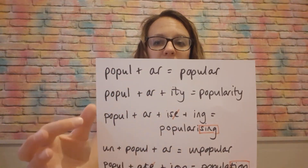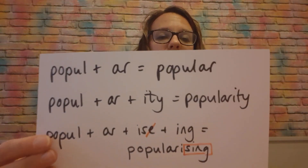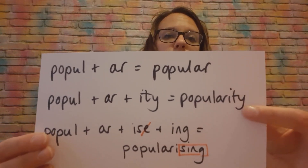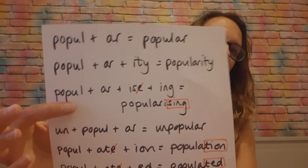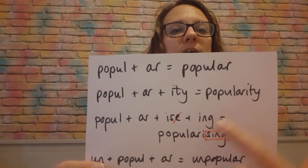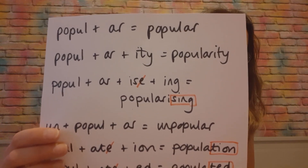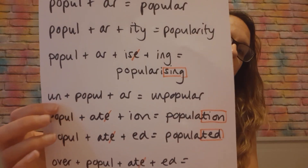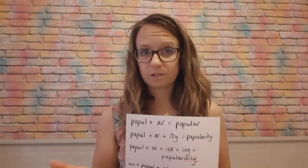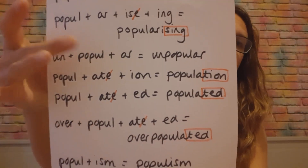From 'popular,' you also have 'popularity.' If 'popular' is the adjective, 'popularity' is the noun that goes with it — you can talk about someone's popularity. We've also got 'popularizing' — if you popularize something, you make it popular, and 'popularizing' is the continuous form with 'ing' on the end. And then there's 'unpopular' — 'un' meaning not, so unpopular literally means not popular, not the people's choice.